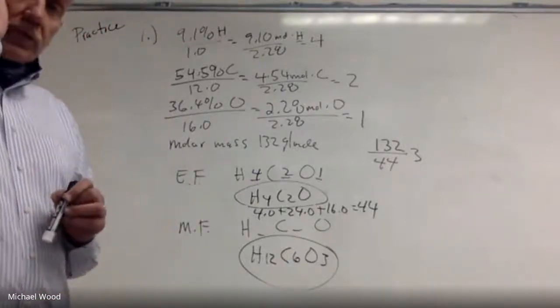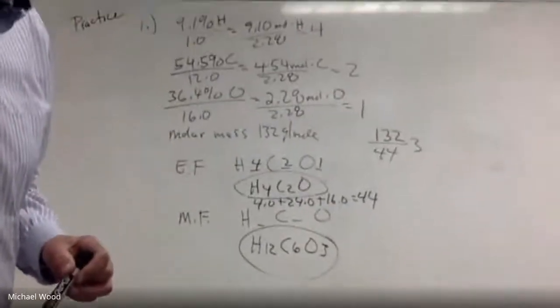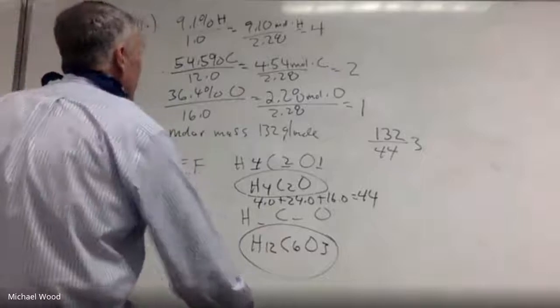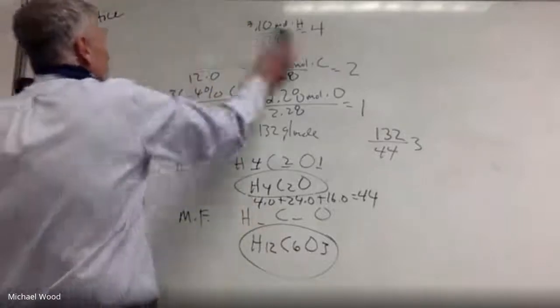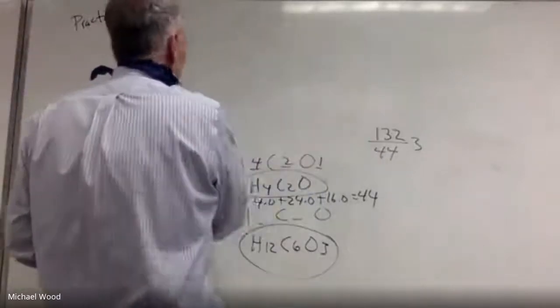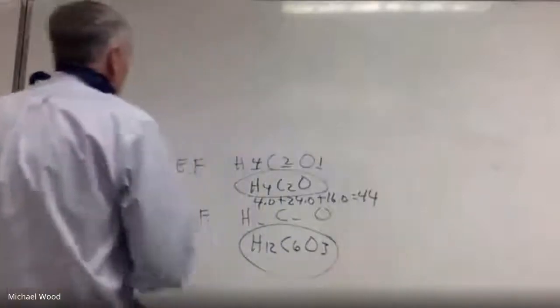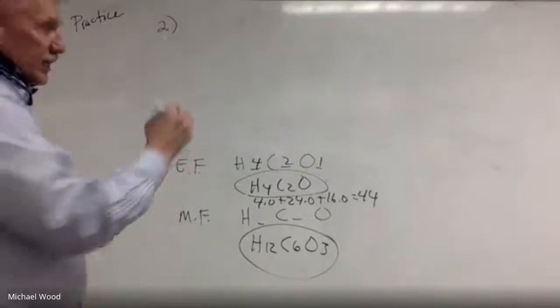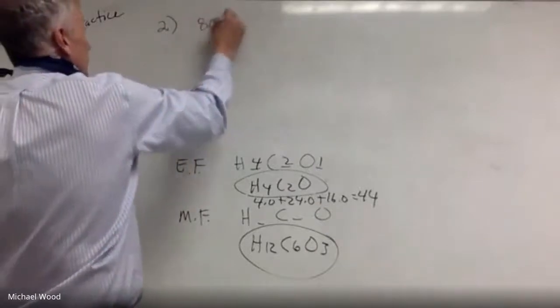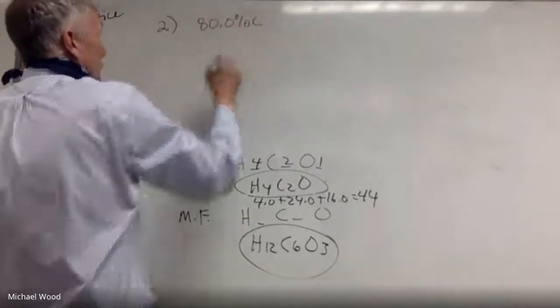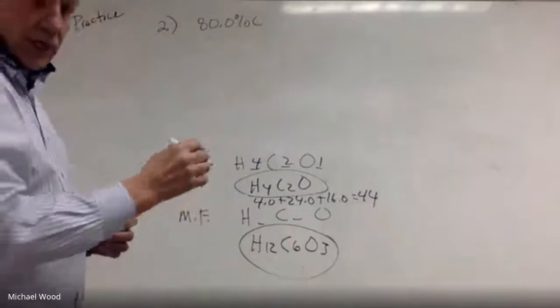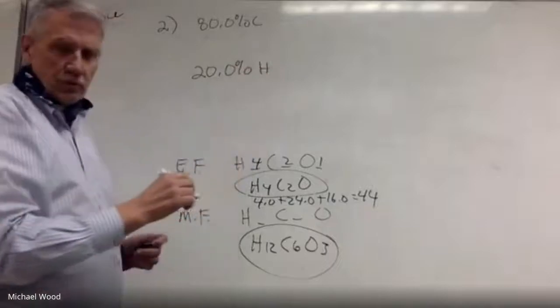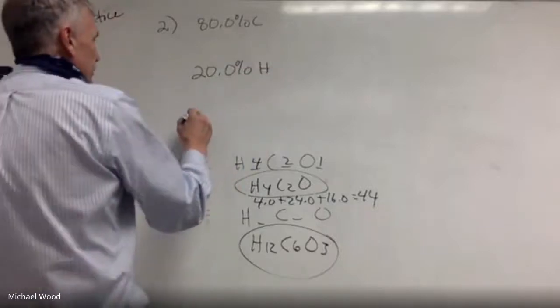Okay, I'll give you a minute, and if you want to take a picture of that, you can. Okay, and then number 2. Okay, so number 2 in practice says that we have, and again, percents you do the same thing that you do with grams. So I'm 80% carbon, I have 20% hydrogen, and the molar mass is 30 grams per mole.